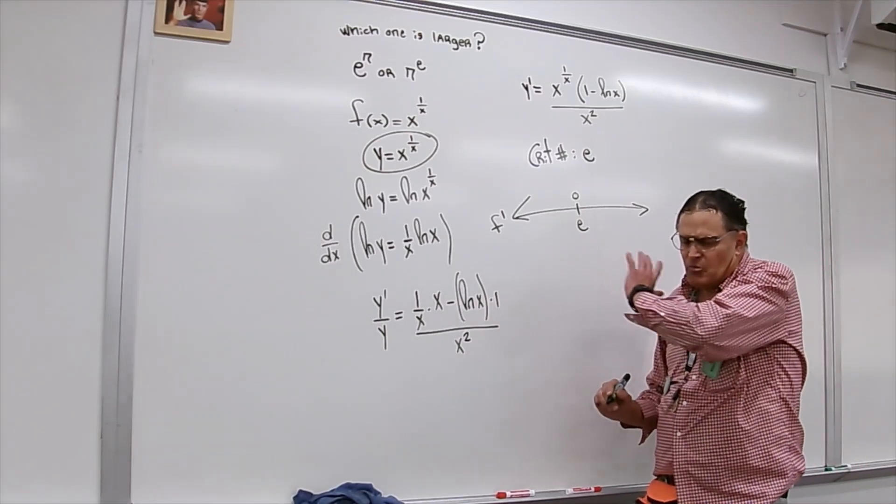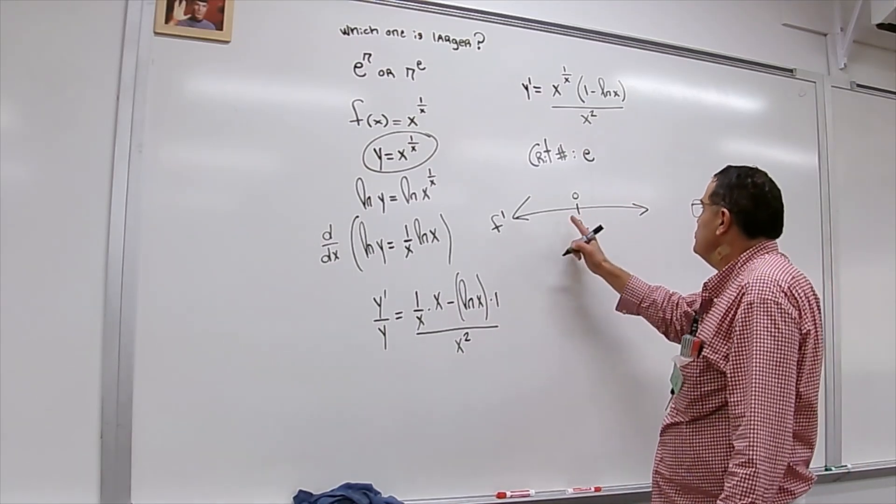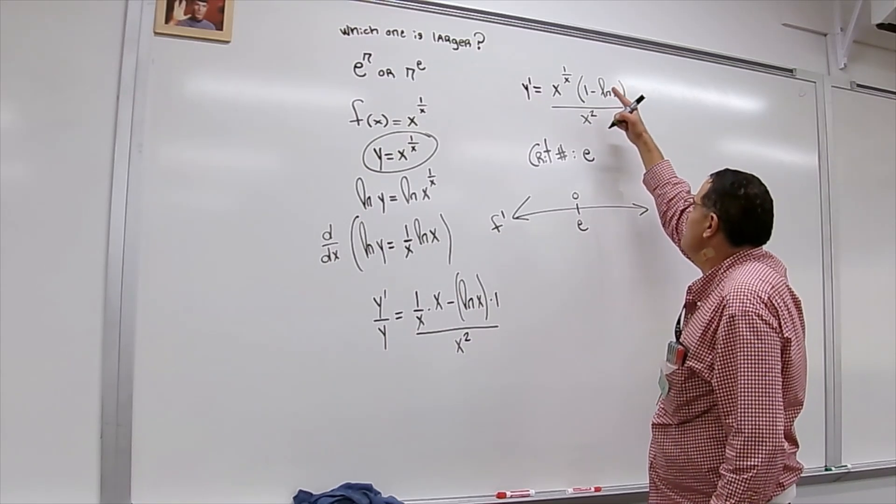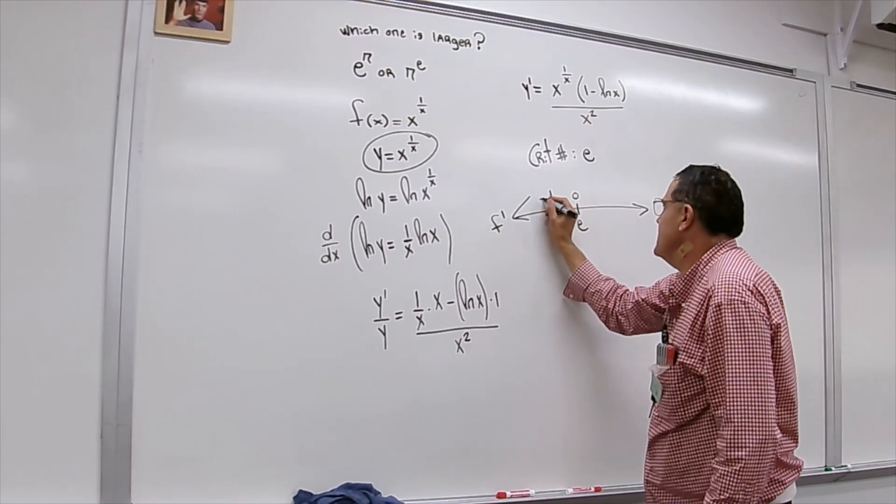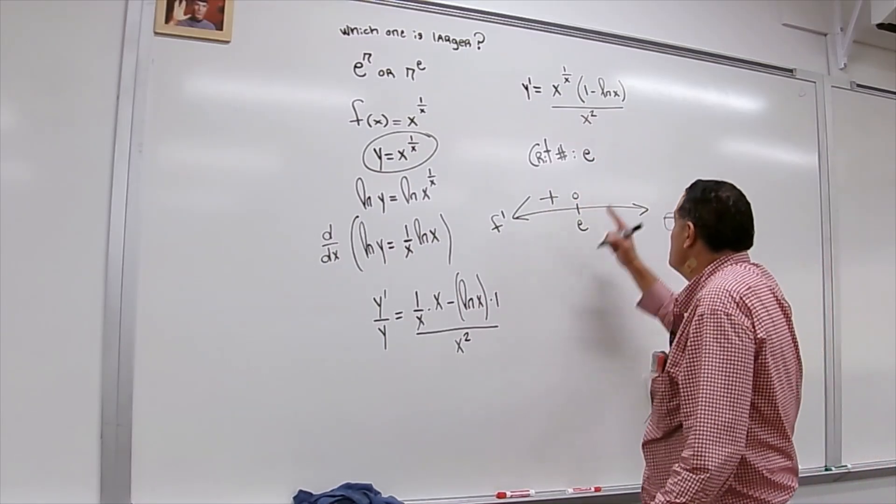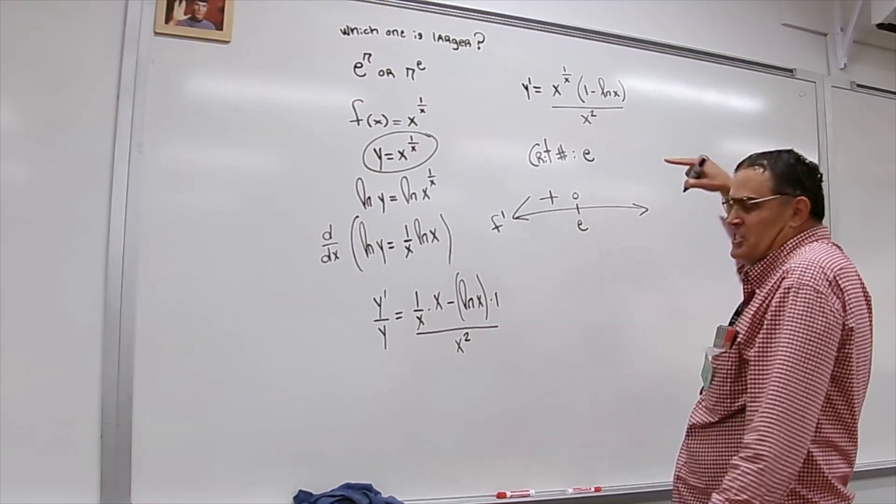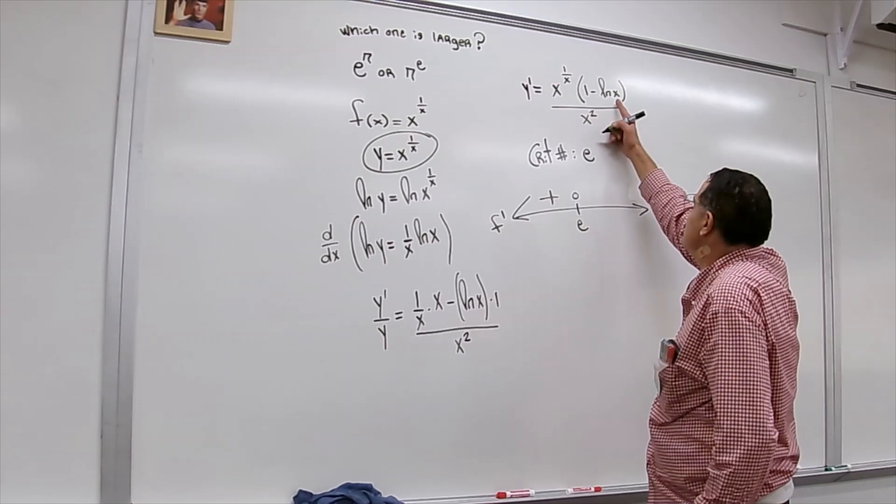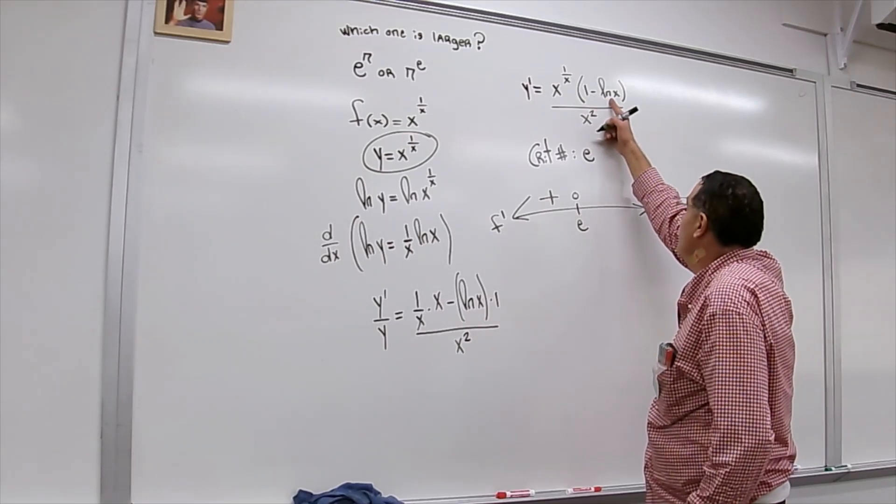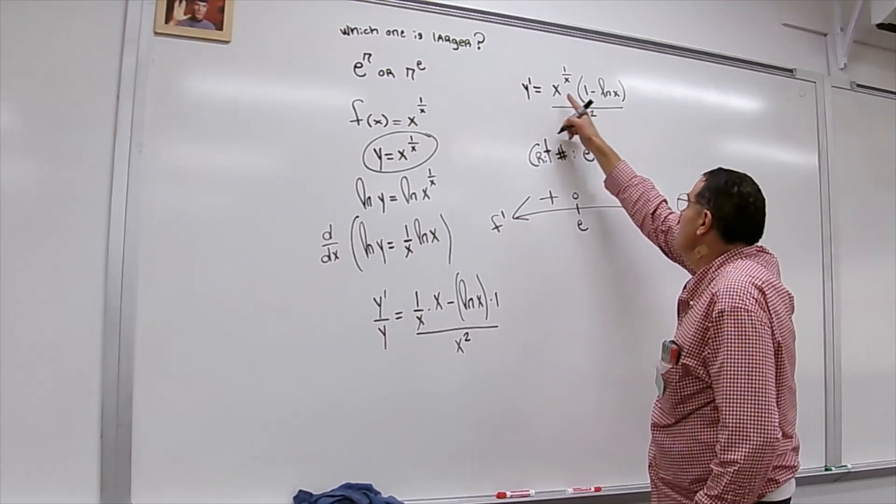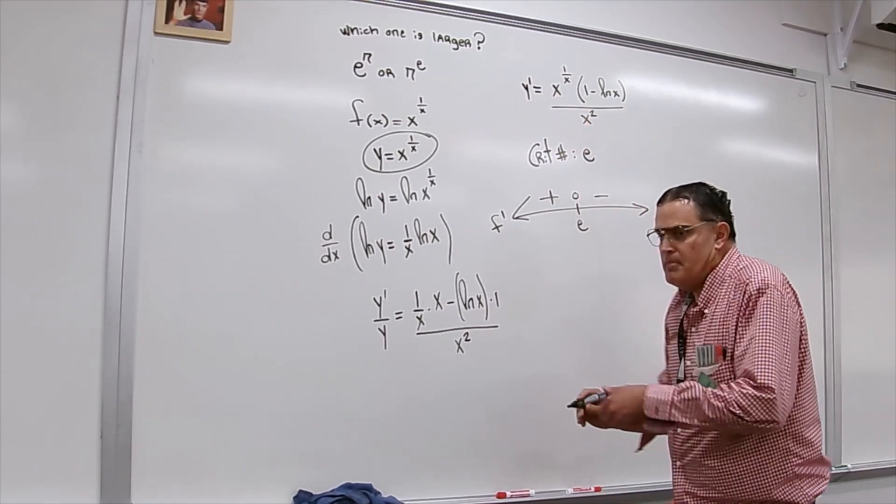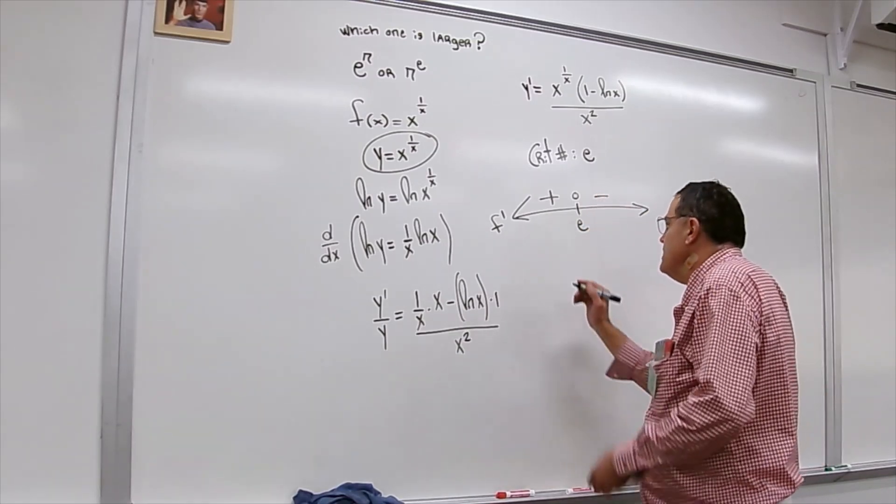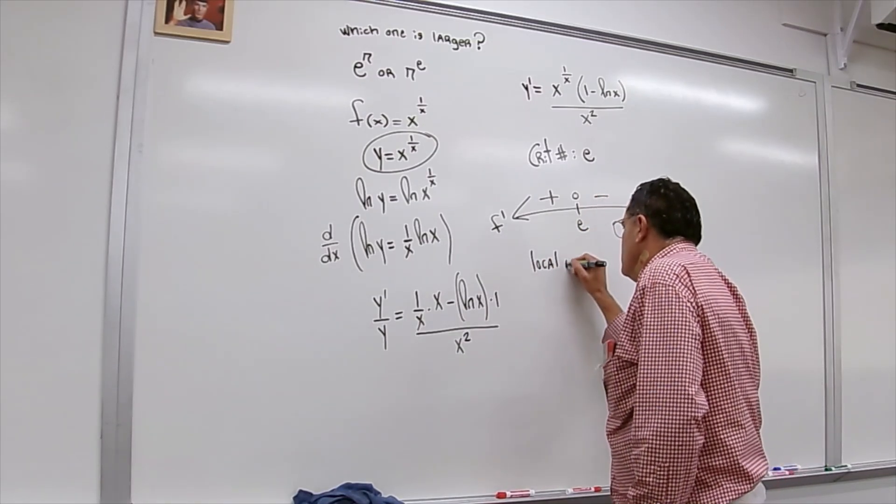Now if you plug 2 into this slope ln of 2 I think is 0.69 so this is positive positive positive which makes a positive you plug in something to the right of 2.7 which is 3 you end up getting ln3 which I think is 1.09 something so 1 minus 1.09 this is going to be negative and then positive and then positive which is negative which means the graph goes up and then down which means there is a local max at e.